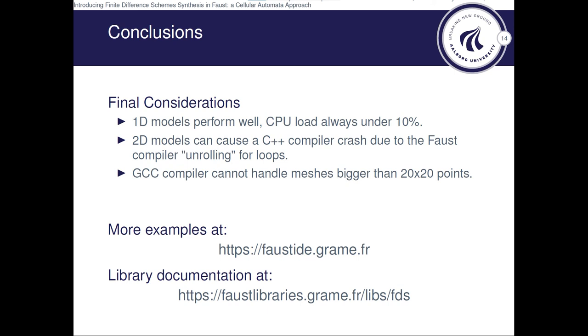In particular, the Faust compiler unrolls all the for loops, and this causes the C++ compiler to crash in some cases. We observed that the GCC compiler cannot handle meshes which are bigger than 20x20 points. And this is an issue that will need to be addressed in the future, because 20x20 points is not enough for many of the two-dimensional models.